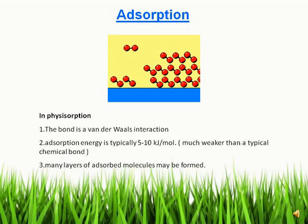Adsorption is a surface phenomenon. What is meant by adsorption? Adsorption means the accumulation of one substance on the surface of another substance. In adsorption there are two types: physisorption and chemisorption. In physisorption, the bond is a van der Waals interaction — a van der Waals force of interaction between adsorbate and adsorbent.